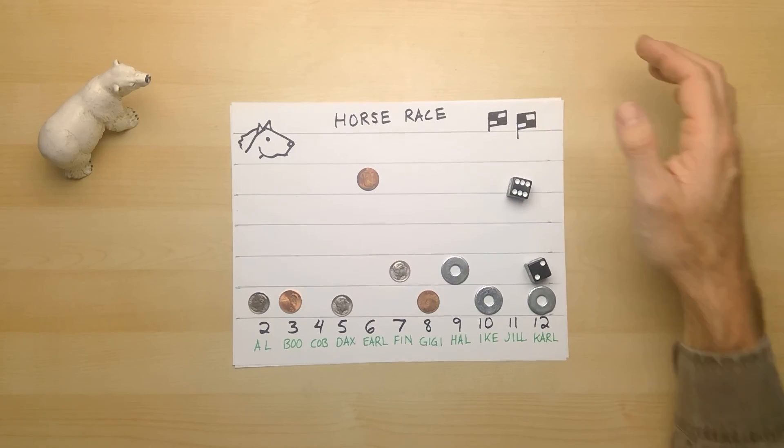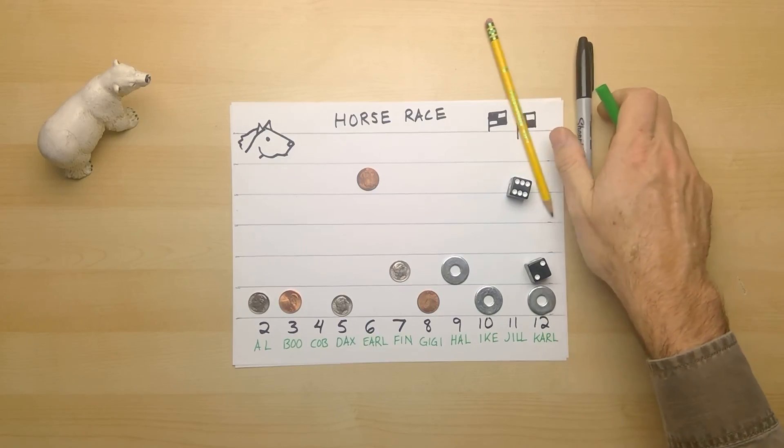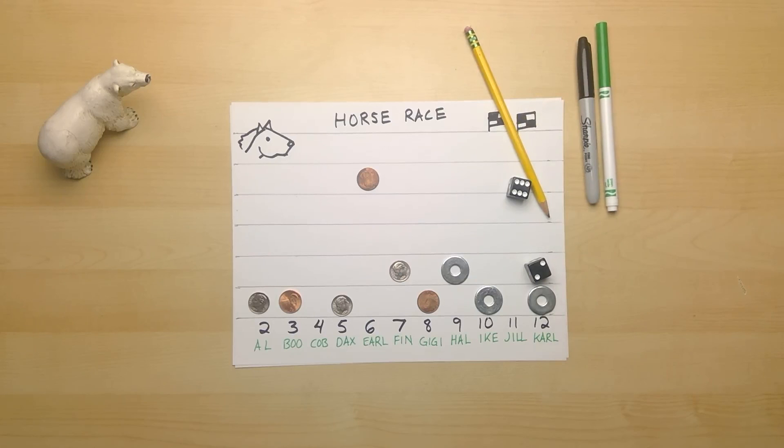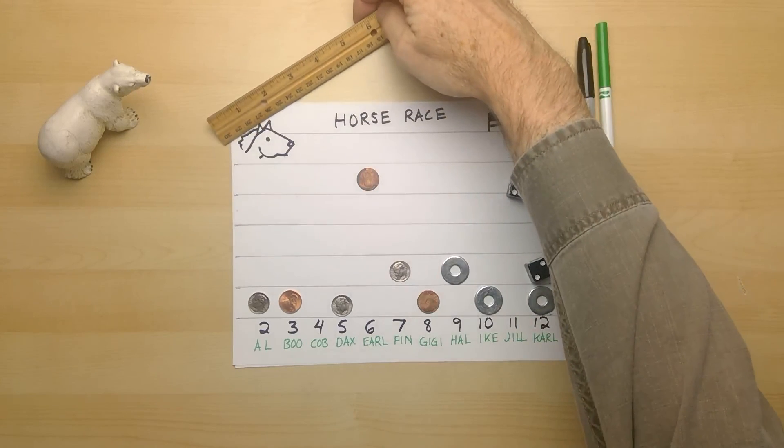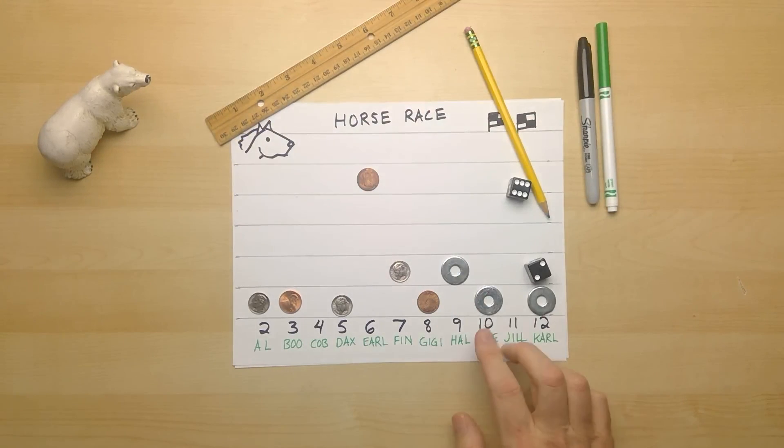And for this game, you needed to have a piece of paper. You need to have some things to write and draw with. You need to have a ruler. You need some playing pieces. Some dice. And maybe you needed a bear as well. Hope you enjoy this game.